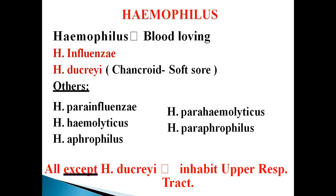Haemophilus para-influenzae through Haemophilus paraphrophilus — all these bacteria inhabit the upper respiratory tract. However, Haemophilus ducreyi inhabits the genital tract.